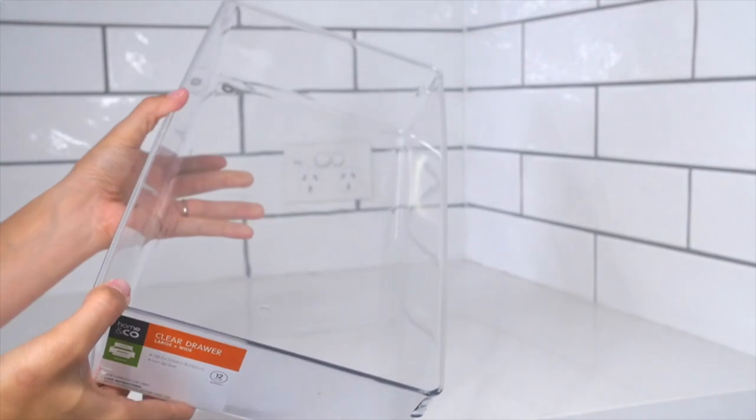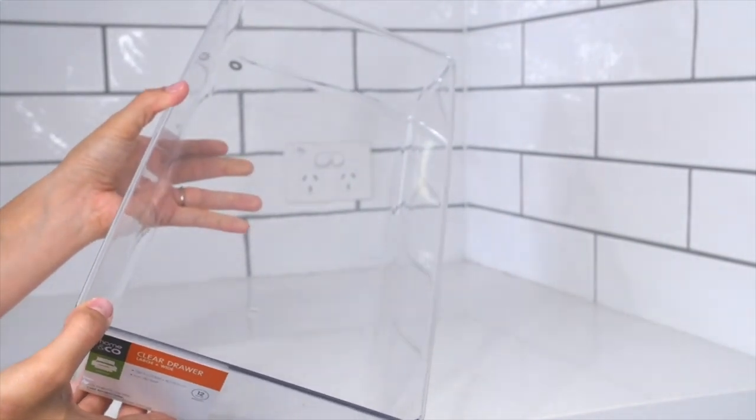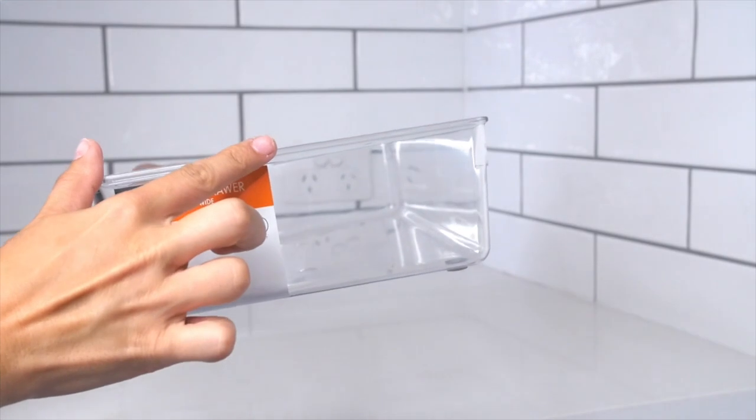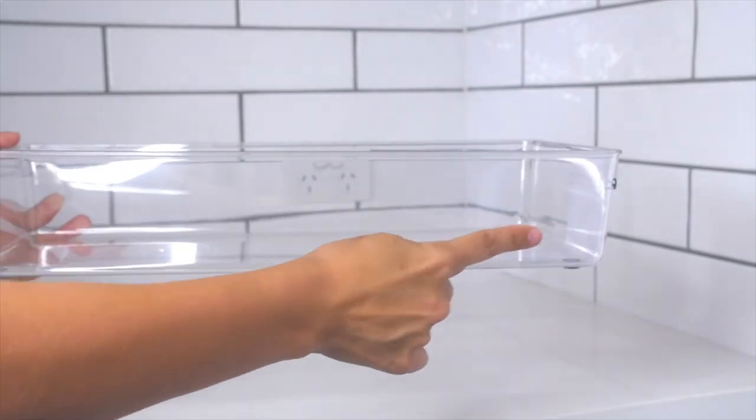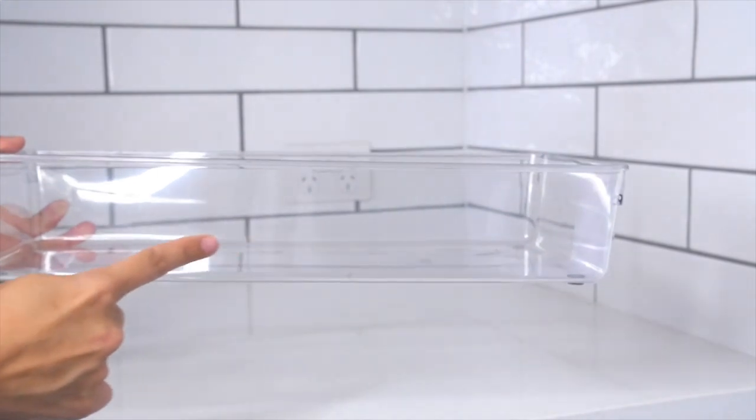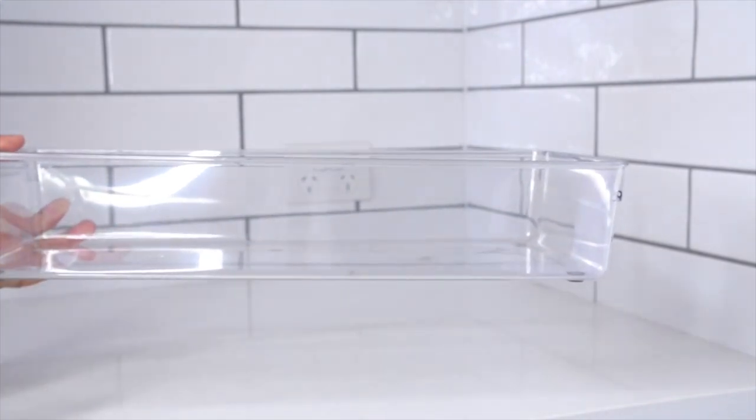I've also picked up two of these 7.8x20x40.5cm tubs which fit perfectly side by side on our fridge shelves. These were only six dollars Australian each and are the perfect size for a breakfast bar for things like Greek yogurt, ricotta, and spreads,